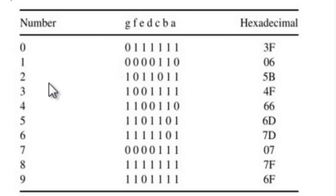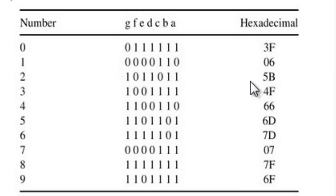To display the number 2, segments A, B, D, E, and G should be on, while C and F are off. For the number 3, the corresponding hexadecimal value is 0x4F, and so on for the remaining digits.